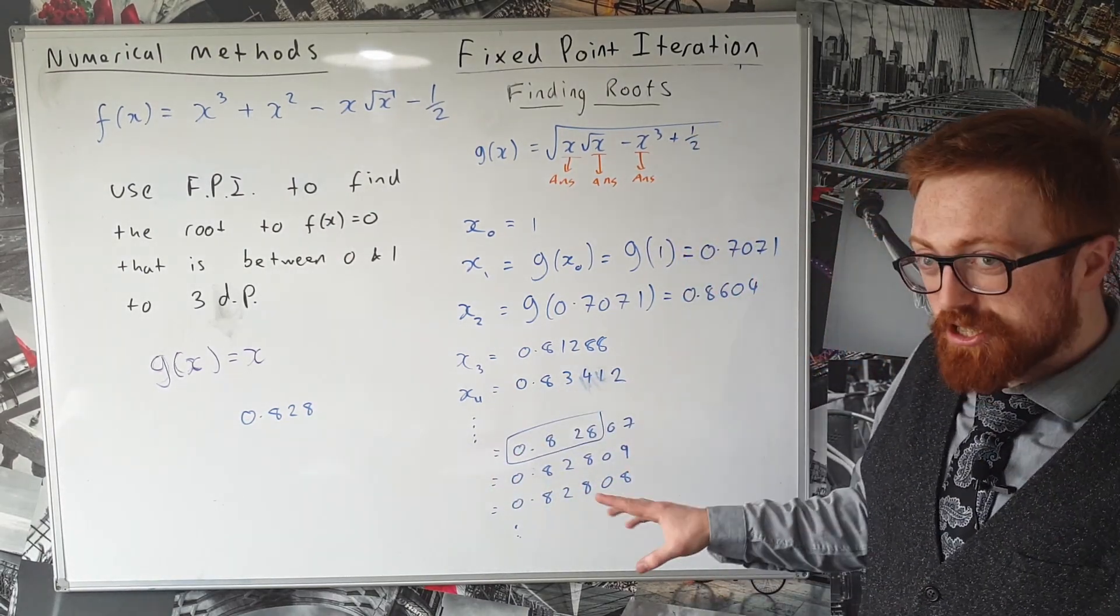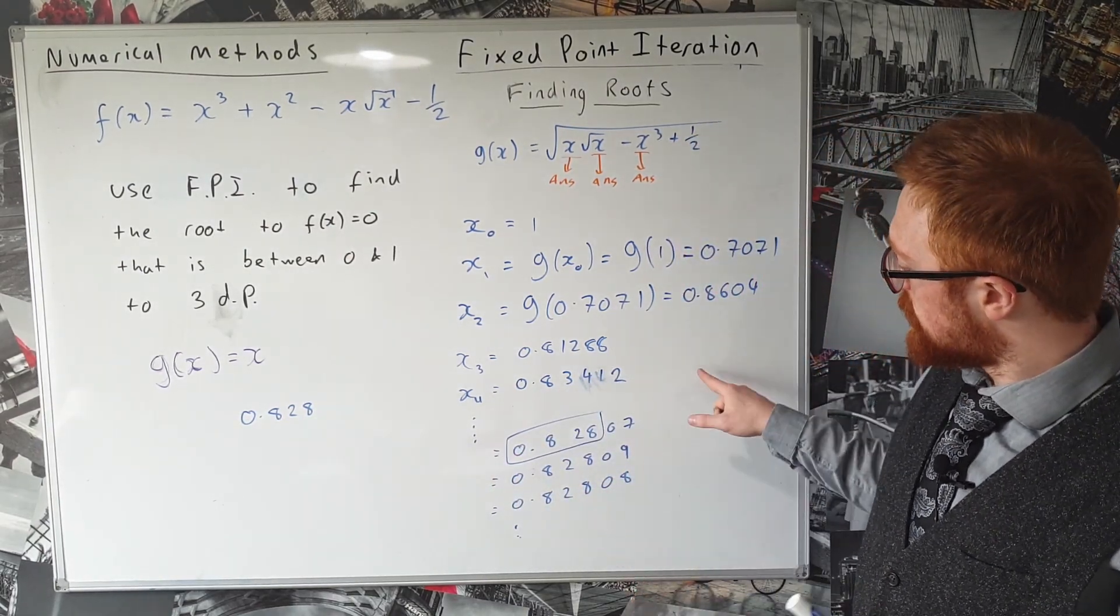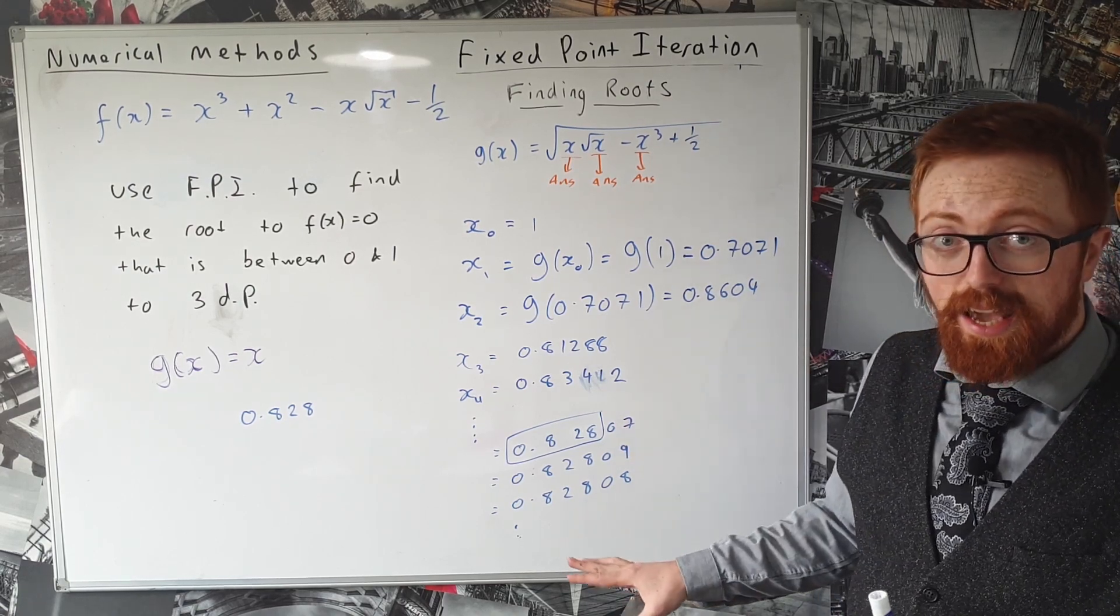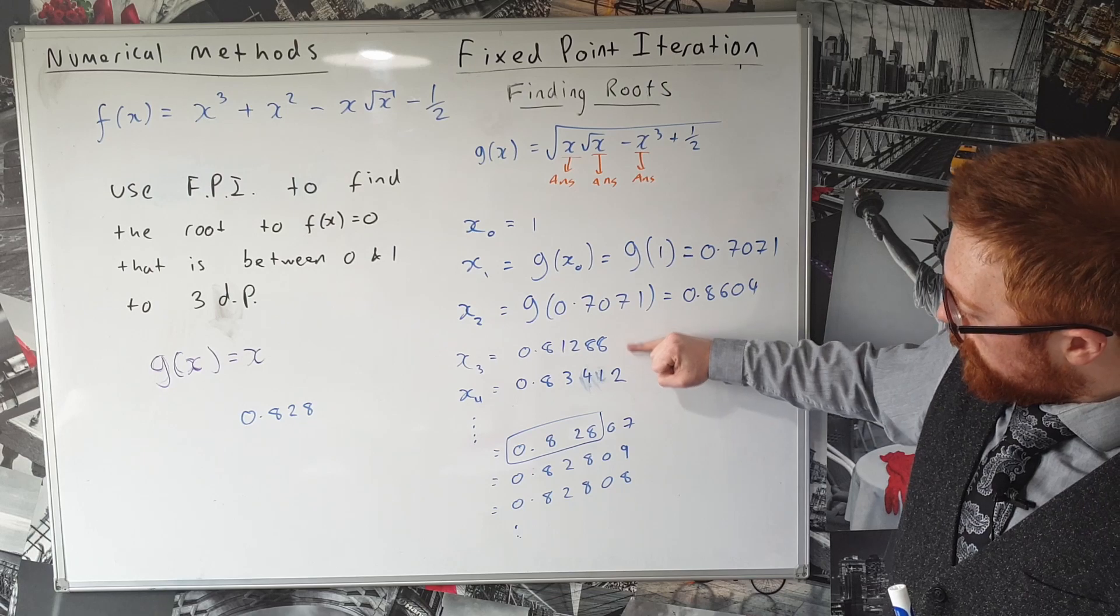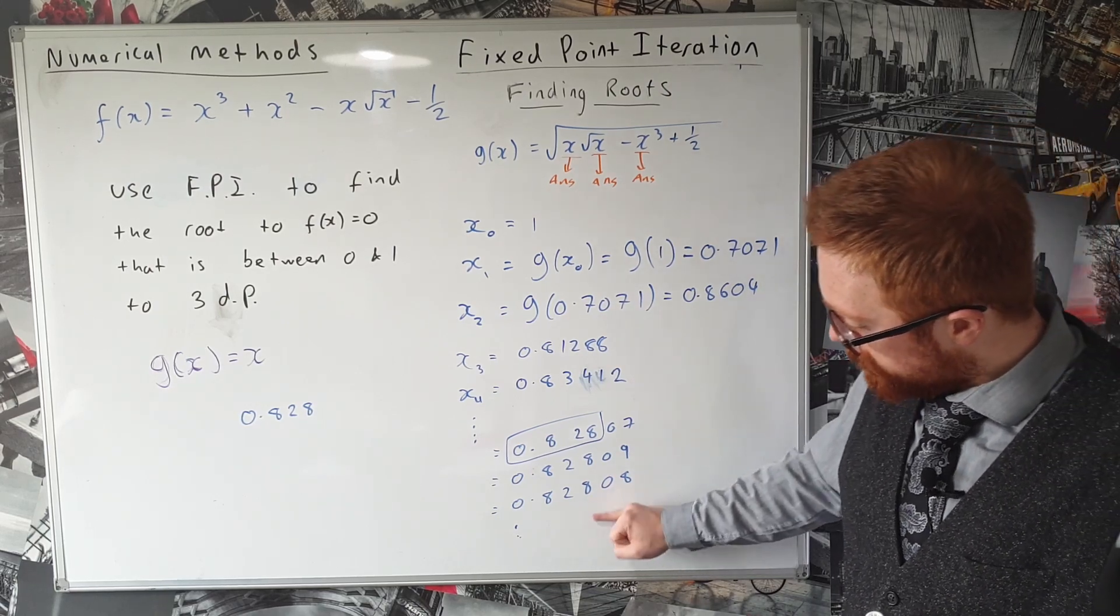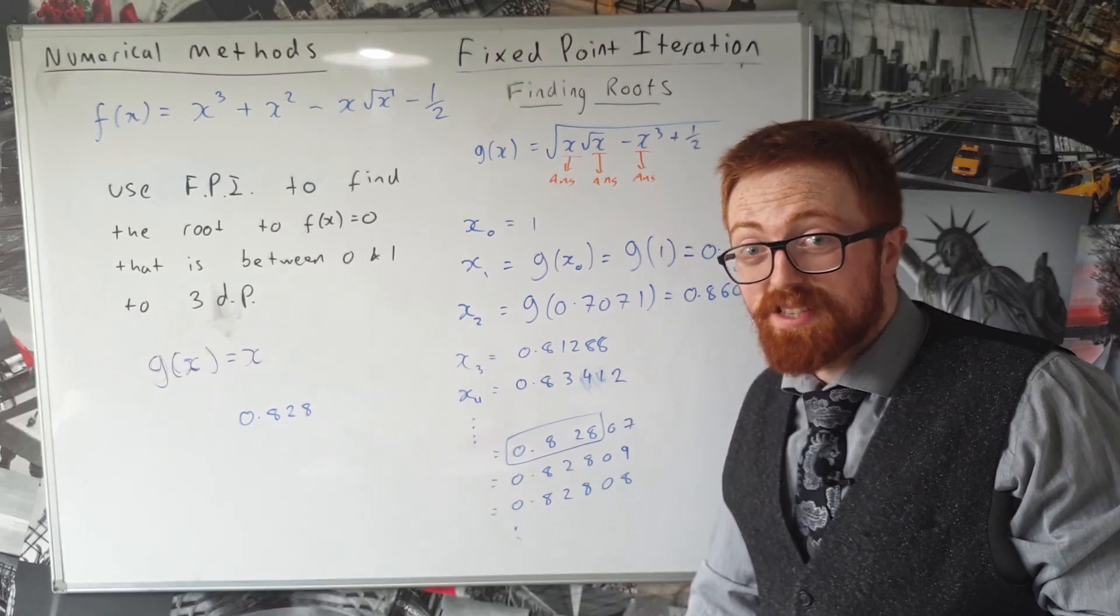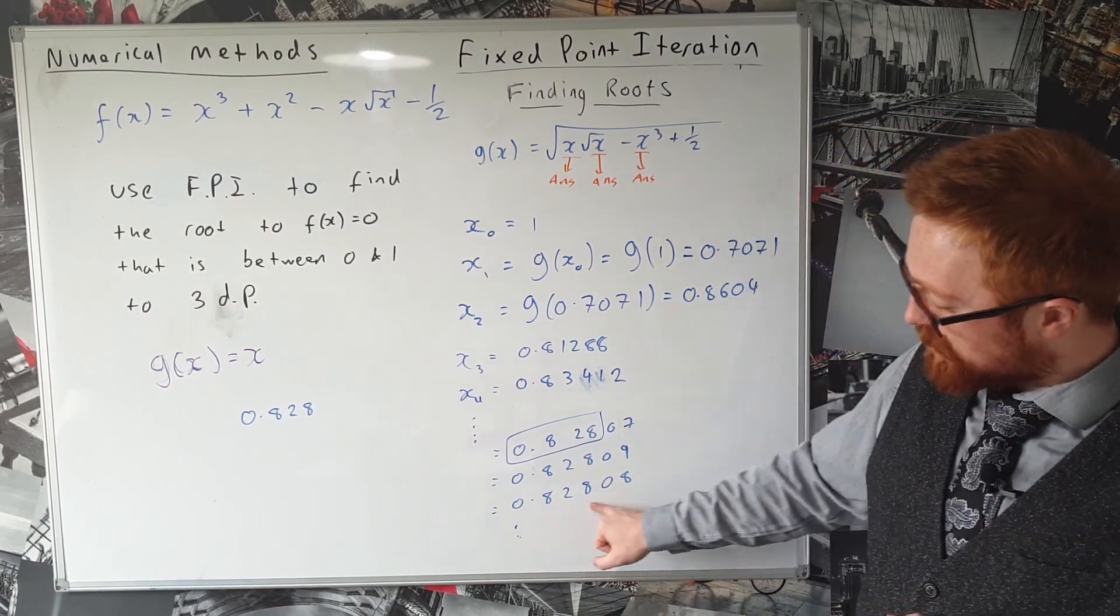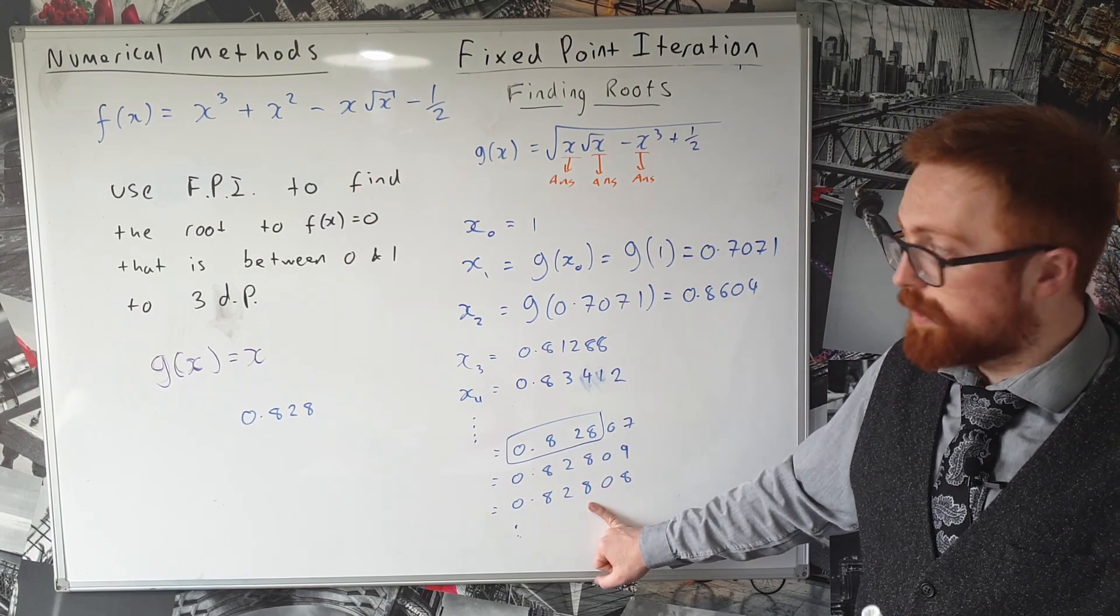Now that isn't actually always the case, and this diagram, if we draw this, is going to give us a cobweb diagram. And if we had a staircase diagram, all of these would either be increasing or decreasing. So there's nothing to stop this number getting bigger and bigger and bigger, even very slowly, but eventually getting out of this 828 to three decimal places range.